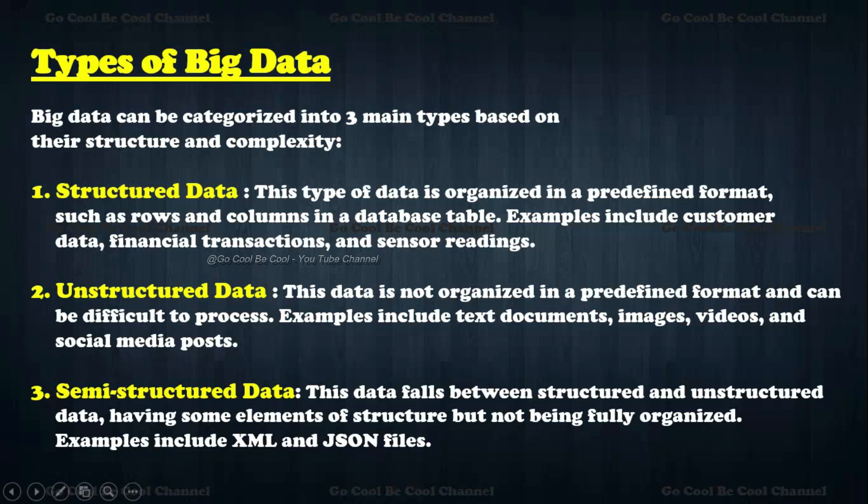Now, what are the types of big data? Big data can be characterized into three main types based on their structure and complexity. In any analysis we see structured data, unstructured data, and semi-structured data. Structured data is organized in a predefined format such as rows and columns in database tables. Examples include customer data, financial transactions, and sensor readings — typically like Excel data with name, age, and so on. Structured data is very easy to analyze.